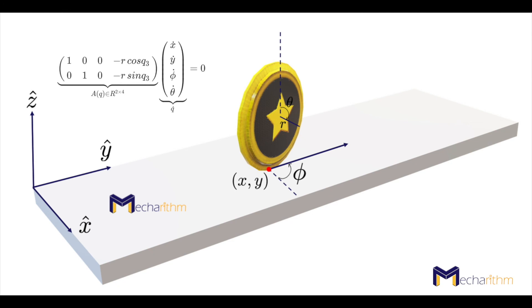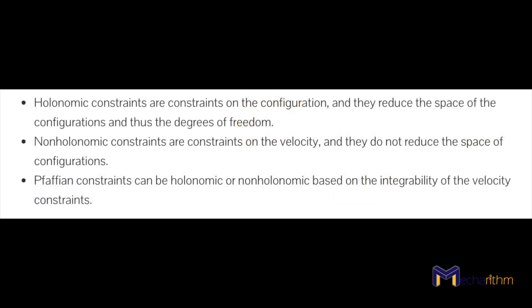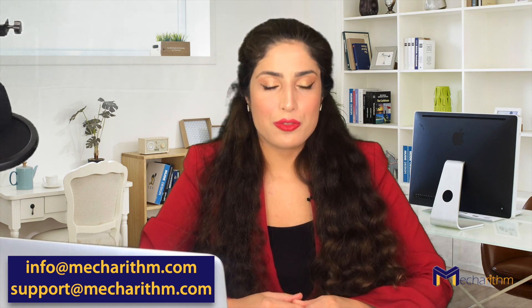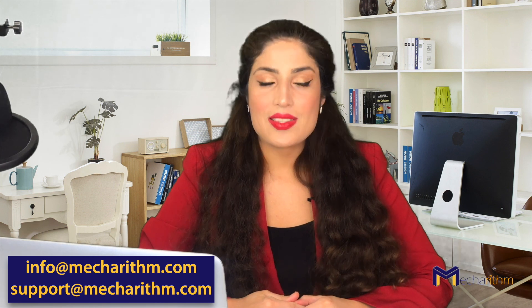In summary: holonomic constraints are constraints on the configuration, and they reduce the space of configurations and thus the degrees of freedom. Non-holonomic constraints are constraints on the velocity, and they don't reduce the space of configurations. Pfaffian constraints can be holonomic or non-holonomic based on the integrability of the velocity constraints, and a system can be subject to both. Thanks everyone for watching. I hope you enjoyed this video and got a good understanding of the difference between non-holonomic and holonomic constraints. Be sure to send us an email with your feedback on how to improve our lessons. See you in the next lesson. Bye-bye!